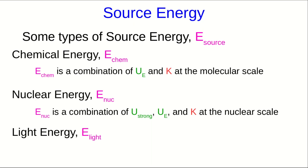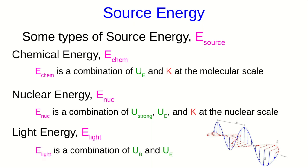Light energy is a little different. A traveling light wave is a combination of electric fields and magnetic fields. Perhaps we'll look at this in a little more detail later, but for now I will just say that light energy is a combination of incoherent magnetic and electric potential energy at the microscopic scale.